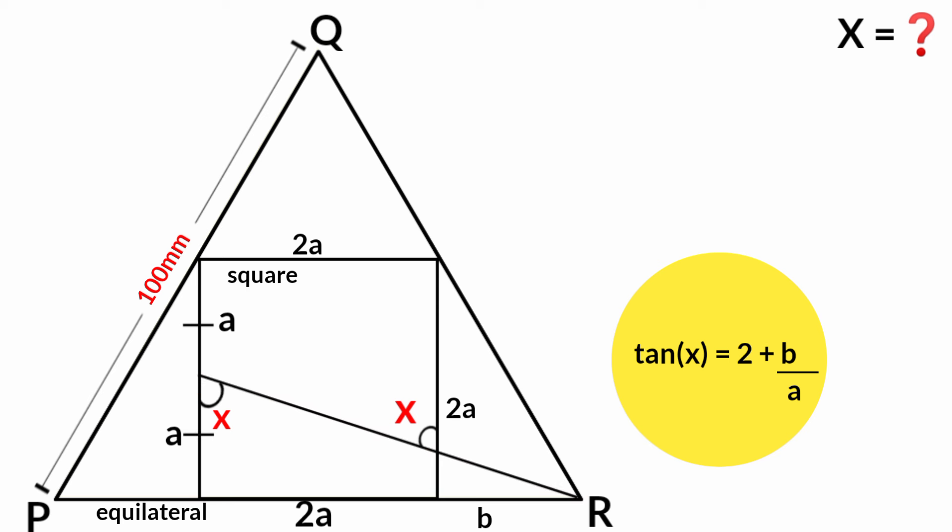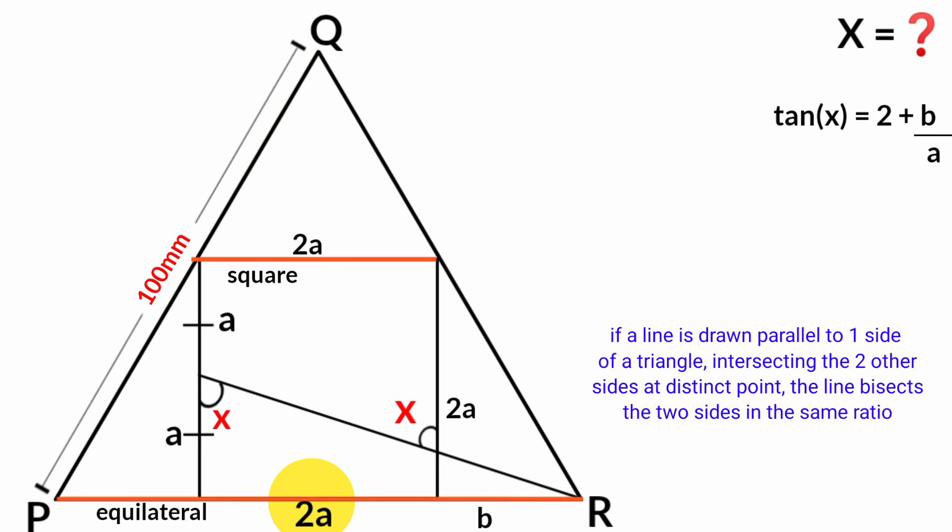Another thing we should consider is that this side here is parallel to this side. And we know the rule that if a line is drawn parallel to one side of a triangle to intersect the other two sides in distinct points, the sides are divided in the same ratio. What I'm trying to prove from this rule here is that this line here divides this line and this line in the same ratio. And since the whole triangle is an equilateral triangle, that means this side and this side must be equal in length, and this and this must also be equal in length. Let's say the length is c.